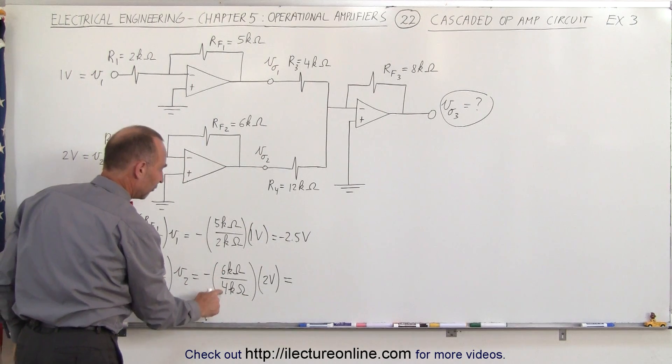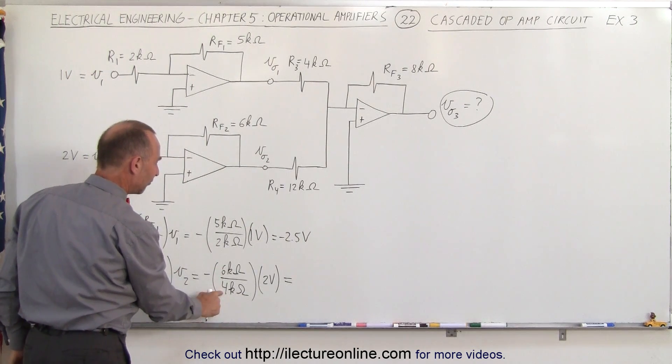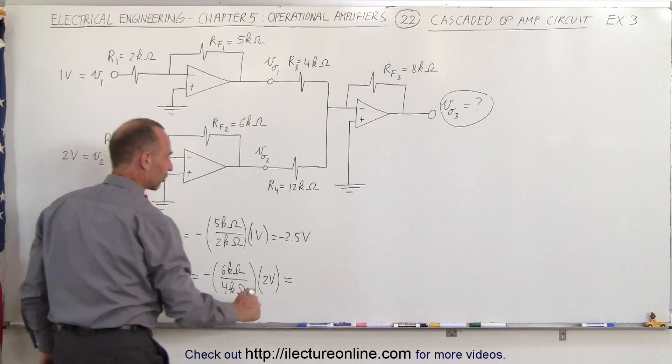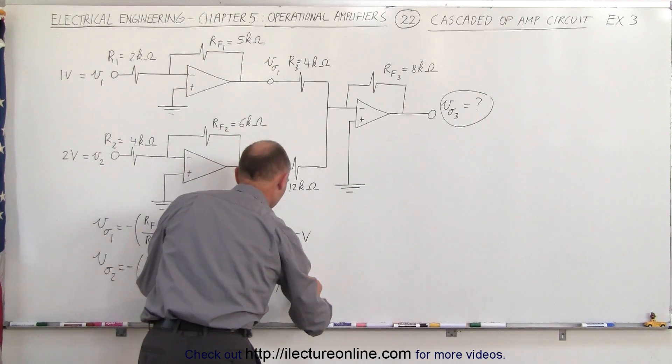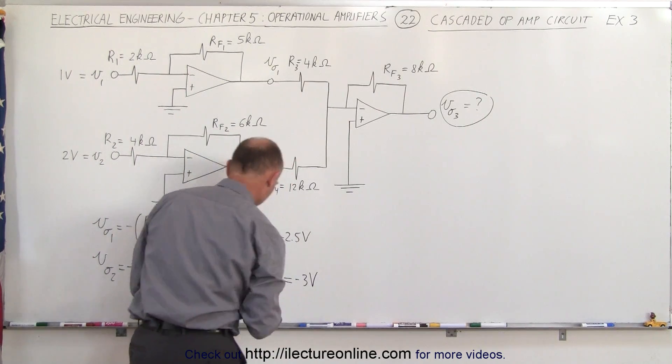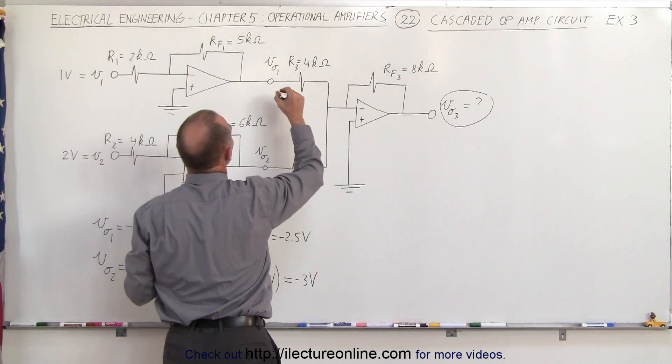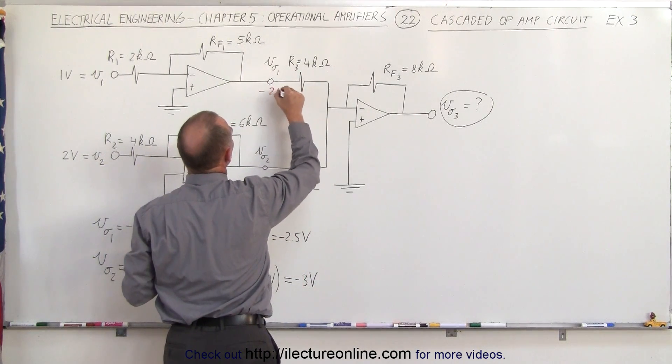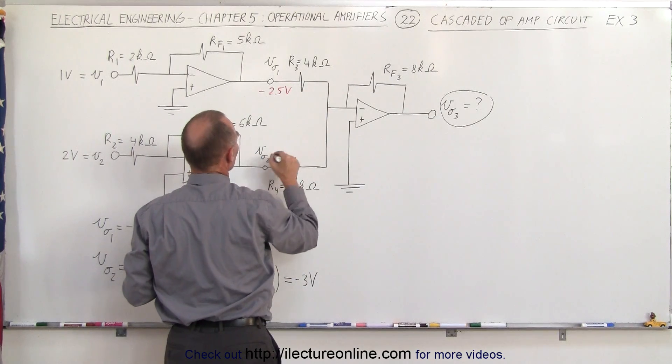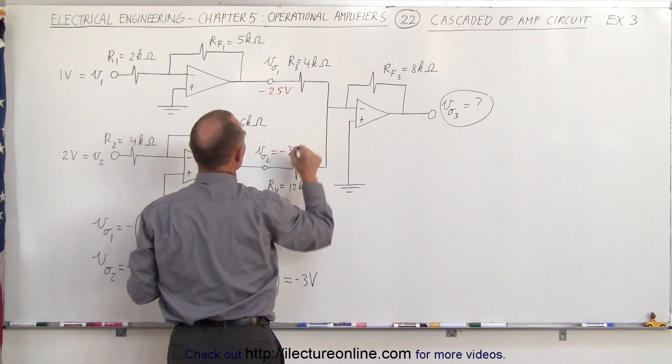So the ratio of 6 to 4, well that's 1.5. 1.5 times 2 gives us 3 volts, and we still have the negative sign so minus 3 volt input there. So let's use our red pen here to indicate that here the input voltage is minus 2.5 volts and here the input voltage is equal to minus 3 volts.